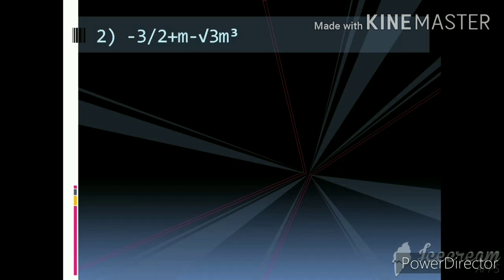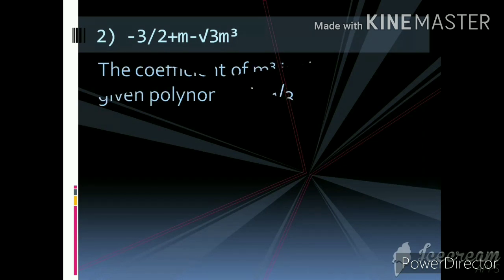Question 2: -3/2 + m - √3·m³. With m³, the coefficient present is √3. Therefore the coefficient of m³ in the given polynomial is √3.